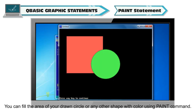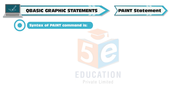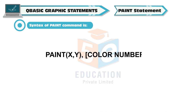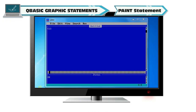Paint statement: You can fill the area of your drawn circle or any other shape with color using the paint command. Paint statement fills the closed areas on the screen with a specified color. The syntax of the paint command is: PAINT (x,y), color number.